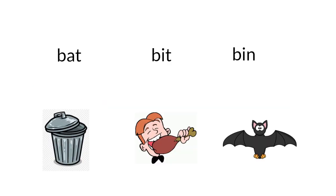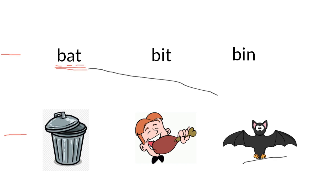Here we need to read the words on the first row and match them with the pictures on the second row. Let's read the first one together: the - at - bat. Can you point to the picture of the bat? Yes, this is the bat. So we draw a line. Now let's read the second word: the - it - bit.